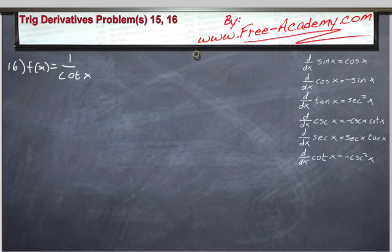Now let's go on to problem 16, which is f of x equals one over the cotangent of x. Well, we started off by doing problem 15 the hard way and then showing the easy way. Let's not do that again with 16. Let's make this easy for us.